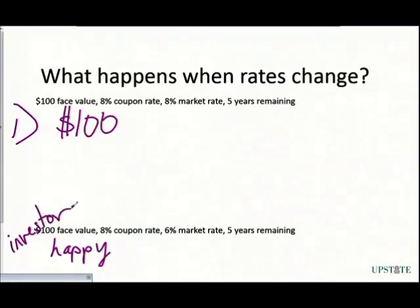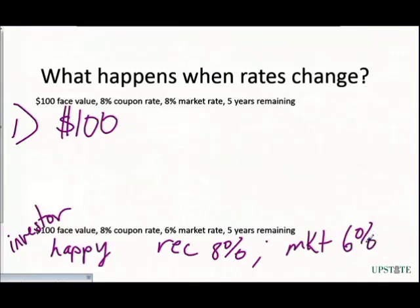The investor is happy because they are receiving 8% on their money. Everyone else that's looking at something comparable is receiving 6%, so they're happy. They're receiving 2% additional on their money. You're getting 2% more - everybody else is getting 6%, you're getting 8%.